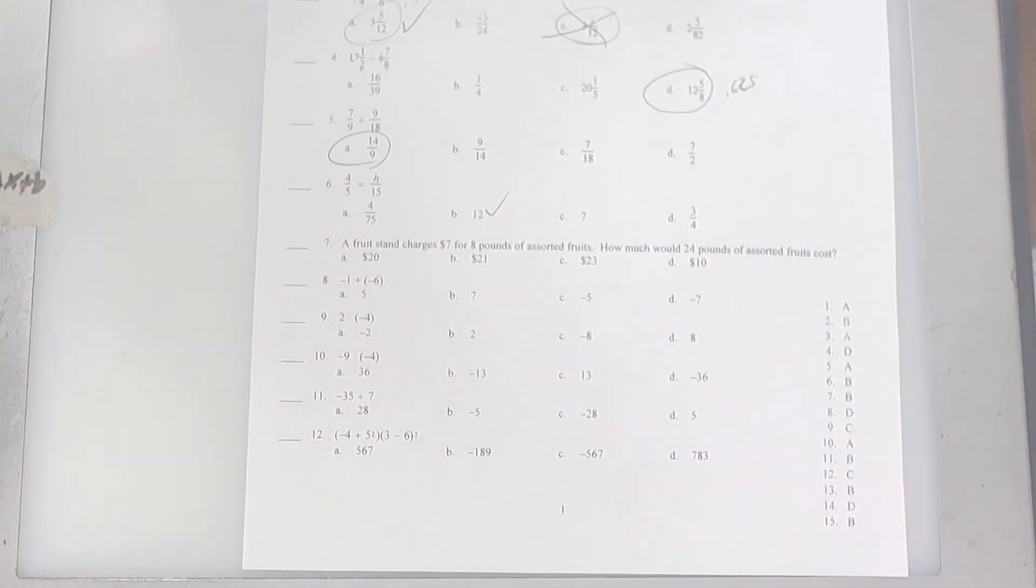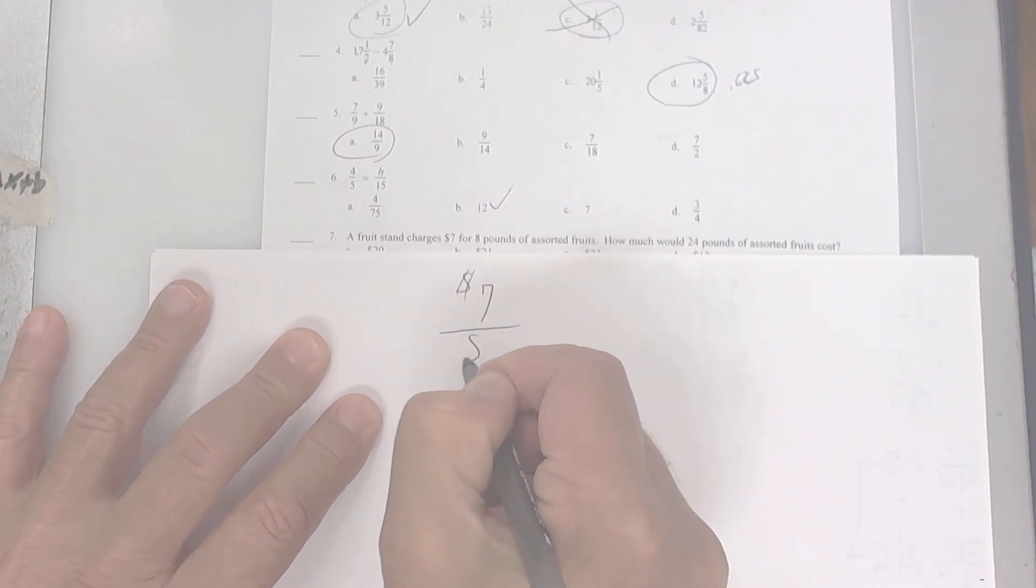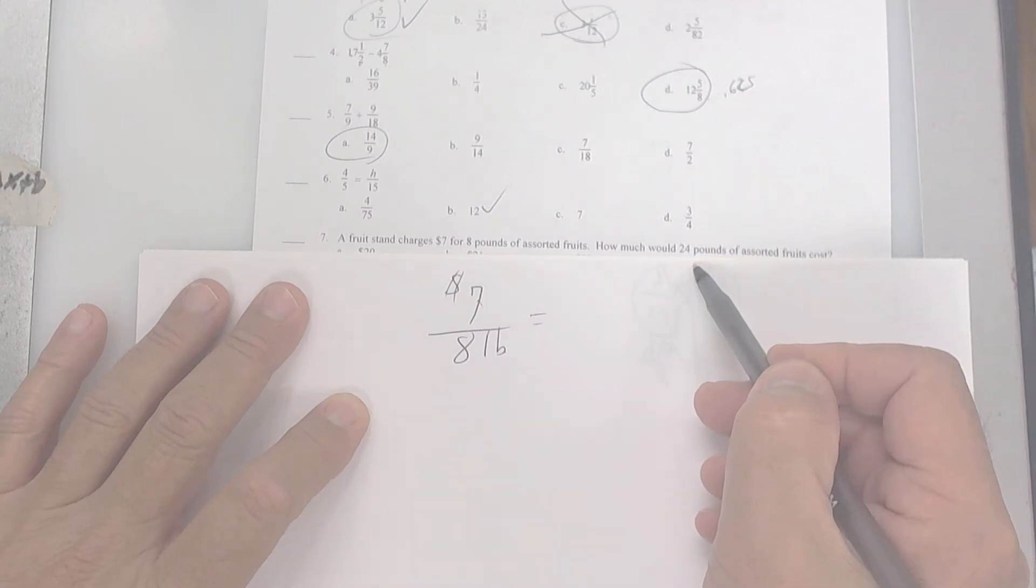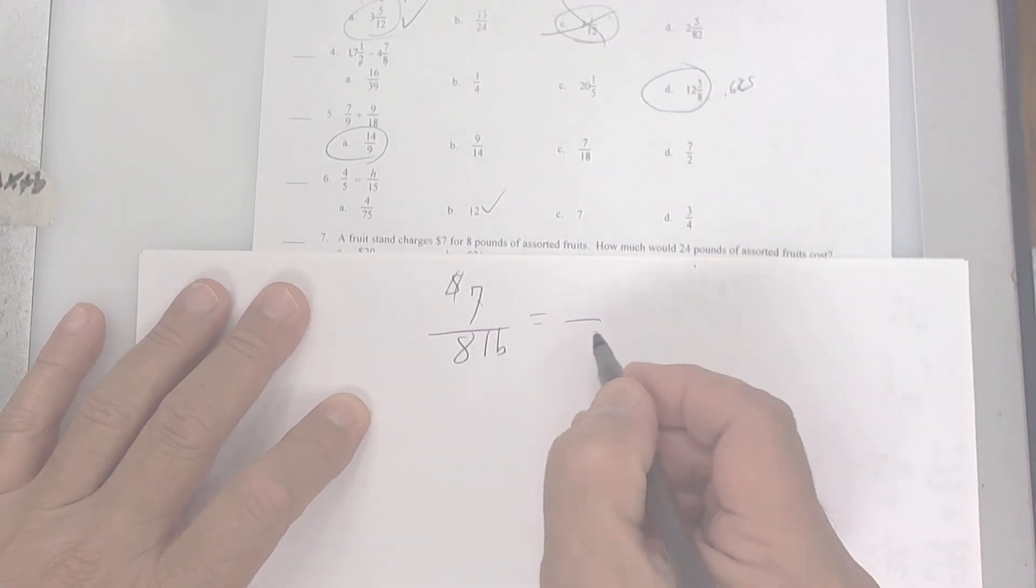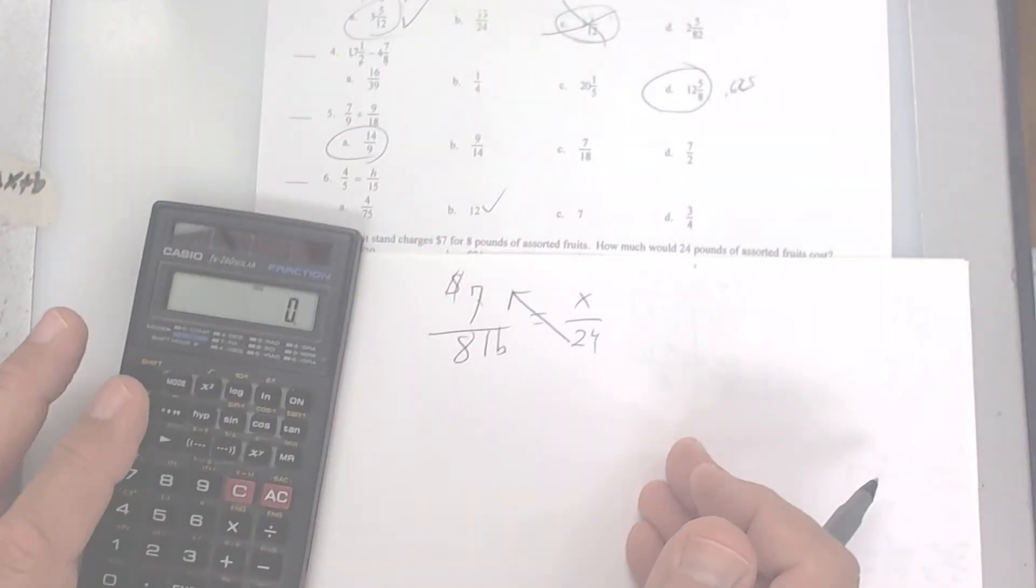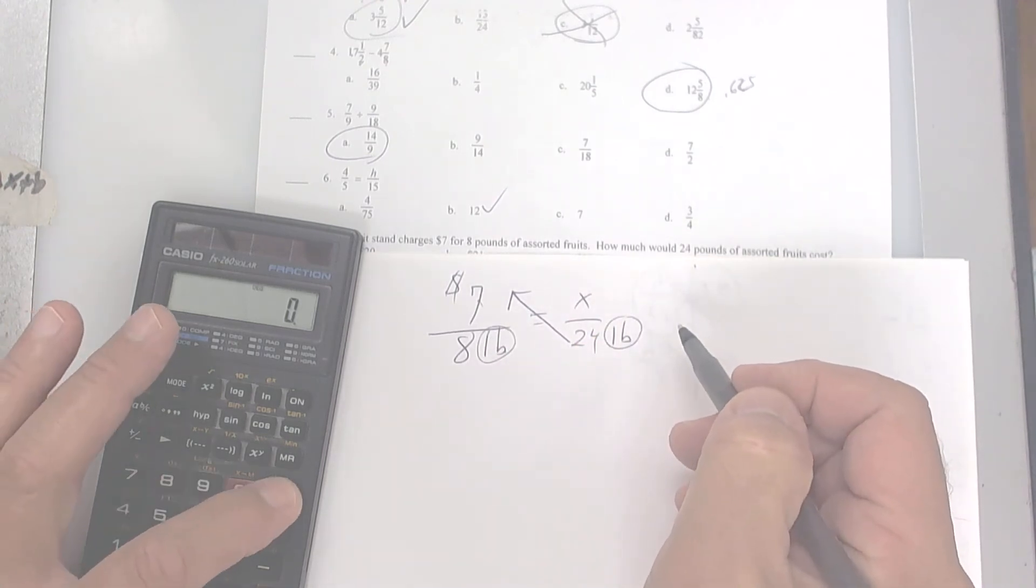All right, look at this one right here. A fruit stand charges $7 for 8 pounds. So you're going to set a proportion up. So $7 over 8 pounds. So you've got money over weight. And here they give you 24 pounds. So if you have 24 pounds, pounds is going to go down at the bottom. Number 13 is right there in the corner. And then put an X right here. Make sure that if the pounds is at the bottom, you put pounds at the bottom.